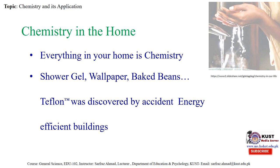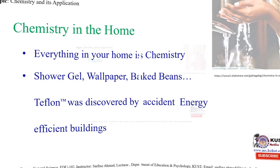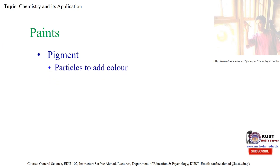If we see chemistry in clothing, colors in the cloth which we wear are due to azodine — an organic compound. Chemistry is useful in our daily life. Without chemistry, you can't think. Chemistry will always be with us. In paints, pigment provides particles to add colors. When we mix up different chemicals, the color of the paint becomes different, or we make the colors we want.